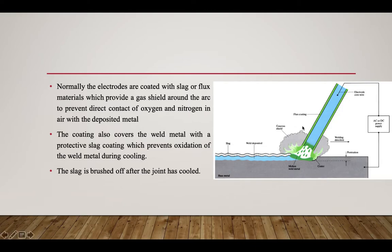In the arc welding figure, a small gap is maintained between the electrode and the workpiece, and a pool of molten metal forms. The electrodes are normally coated with flux, which provides a gas shield around the arc to prevent oxygen or nitrogen from contacting the deposited metal. The flux coating also covers the weld metal with a protective slag coating, preventing oxidation during cooling. The slag is brushed off after the joint has cooled.